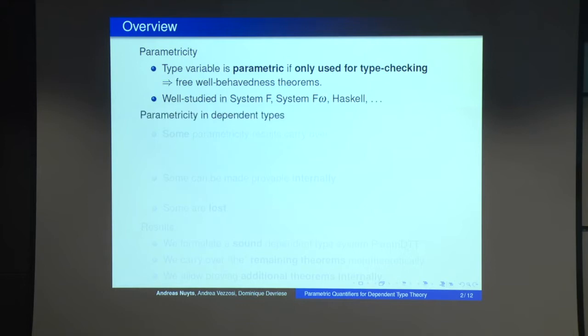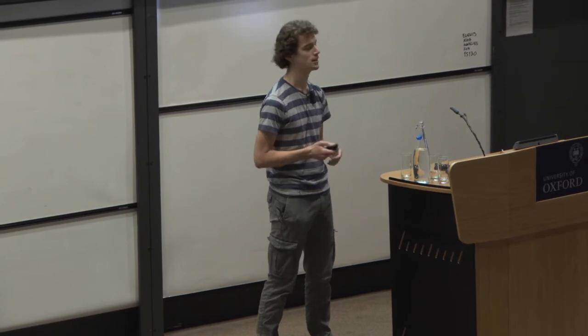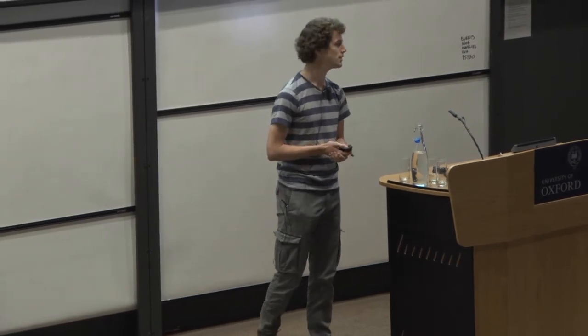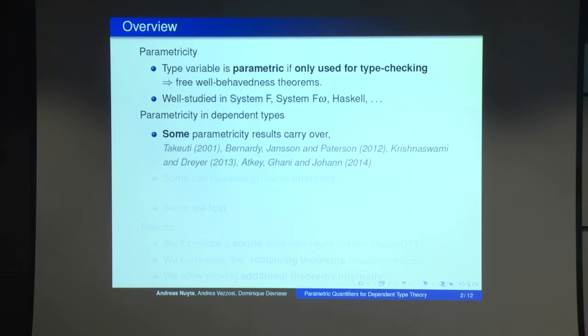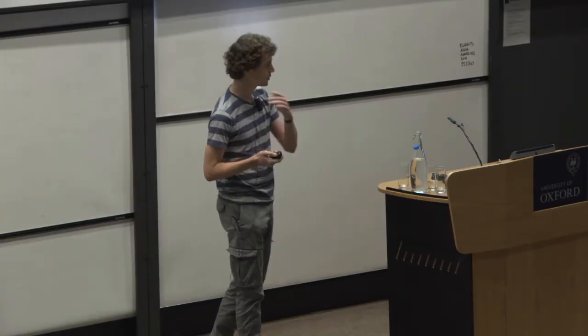But we want to look at it in dependent type theory. And there, it has been shown by many people that some parametricity results from non-dependent type systems carry over. In the PhD thesis of Guillaume Moulin, in the corresponding papers, it is shown that this can also be done internally, so dependent type theory is not just a programming language, but also a logic. So these free theorems, they can be proven internally, so you can modify dependent type theory so that there are proof terms for doing this. But unfortunately, some theorems are also lost, as I will show in a few moments.